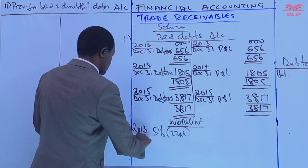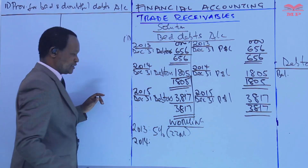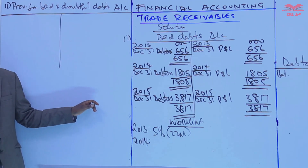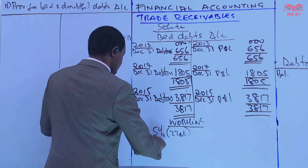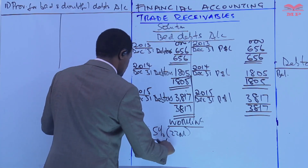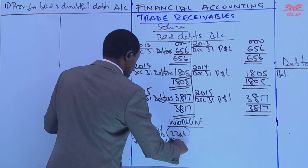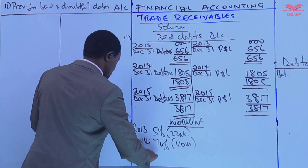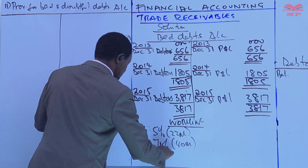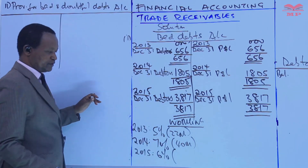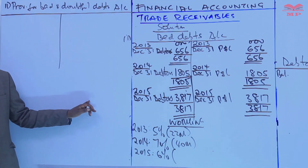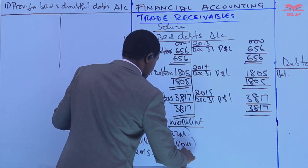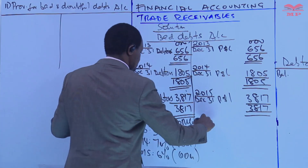In 2014, the percentage is seven percent of 40 million — seven percent times 40 million. Then in 2015, it is six percent of 60 million. These are the workings for the provisions for the three years.